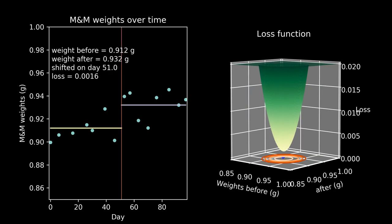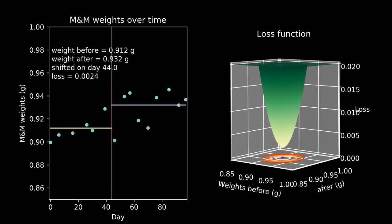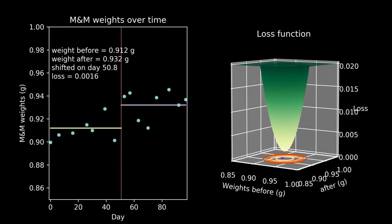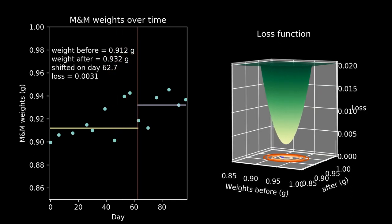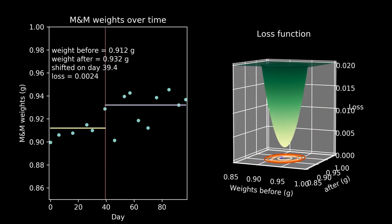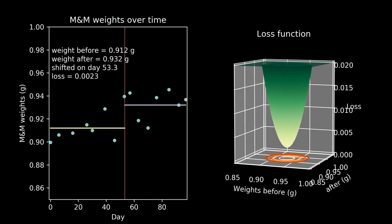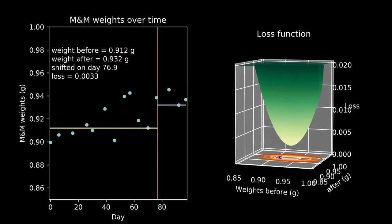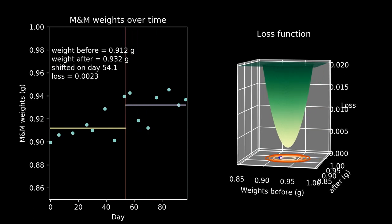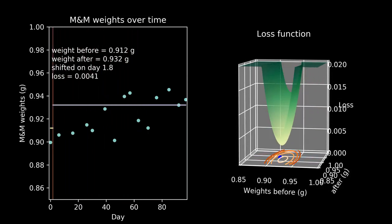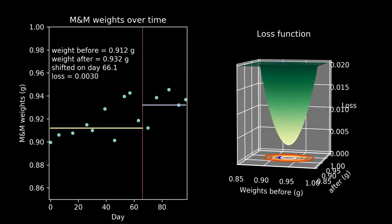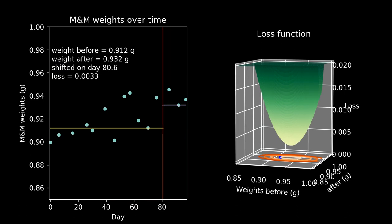If you watch the bottom of the bowl carefully as the shift day progresses, you can see it reaches a low point, then jumps back up, then reaches another low point. This means that gradient descent will give us different answers depending on where we start — the answer is sensitive to our initial guess. This is an example of a non-convex loss function.